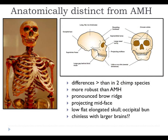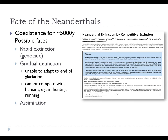Neanderthals were anatomically distinct from modern humans: they had an occipital bun at the back of the skull, a pronounced brow ridge, a receding forehead, a barrel-shaped chest, and were generally much more robust. The anatomical difference between us and Neanderthals is said to be greater than the difference between the two species of chimpanzees — the bonobo and the common chimp. So we are quite distinct from them, though it's a bit more complicated than that.